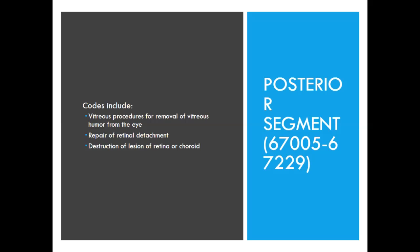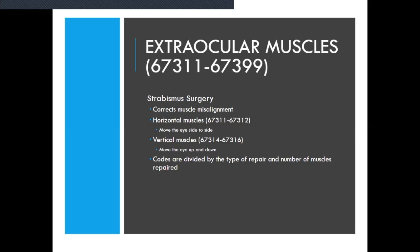Now we're going to move to extraocular muscles, and that's on page 578. Strabismus surgery corrects muscle misalignment. Horizontal muscles are codes 67311 through 67312 and move the eye side to side. Vertical muscles, 67314 through 67316, move the eye up and down. Codes are divided by the type of repair and the number of muscles repaired.